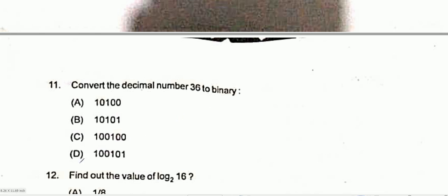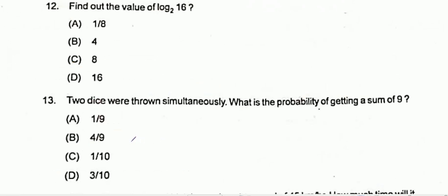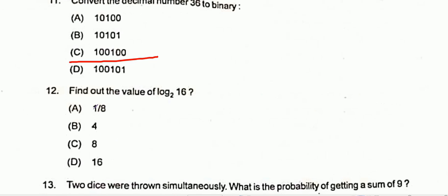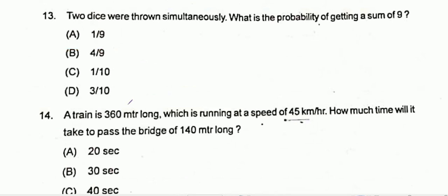Question 11: Convert the decimal number 36 to binary. Option C is the correct one, that is 100100. Question 12: Find out the value of log base 2 of 16. Option B is the correct one, that is 4. Question 13: Two dice were thrown simultaneously. What is the probability of getting a sum of 9? Option A is the correct one, that is 1/9.